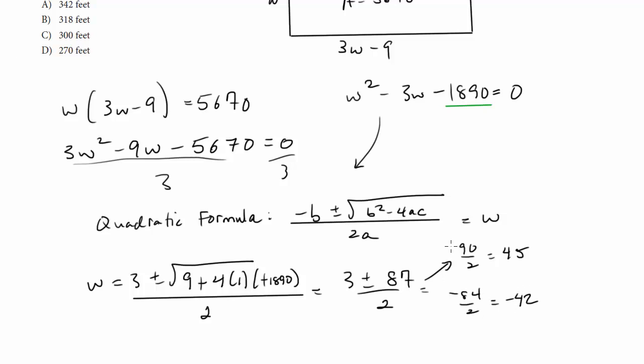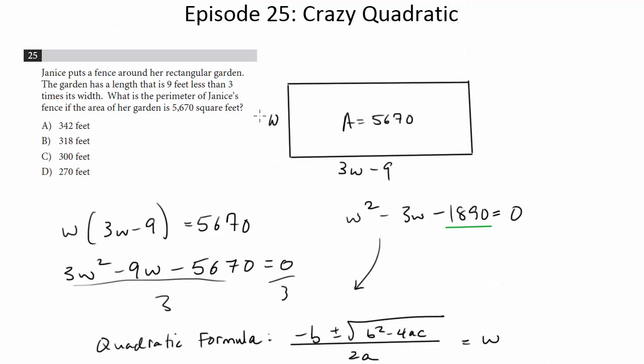Now, because this is a real-life situation, we have some constraints on our answers, and we can't have a negative width. It doesn't make sense. So our width is going to have to be 45. So let's go back up here and plug in our numbers. We know this is 45.